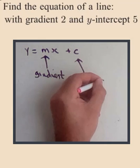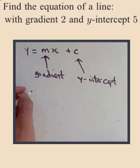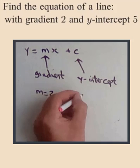We have been told that the gradient is 2, so that means m equals 2. And we have been told that the y-intercept is 5, which means that c equals 5. So it's as simple as y equals mx plus c — y equals 2x plus 5 — and that's it.